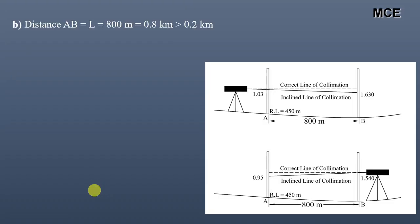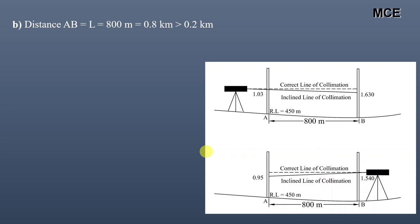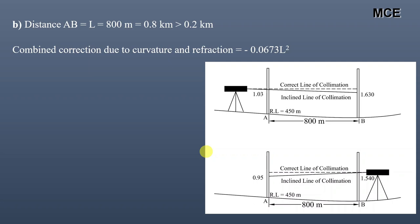The distance between the two stations is 800 m, equal to 0.8 km, which is greater than 200 m. When distances between stations exceed 200 m, there is error due to refraction and curvature. The combined correction for curvature and refraction is: −0.0673 × L² = −0.0673 × (0.8)² = −0.0431 m.